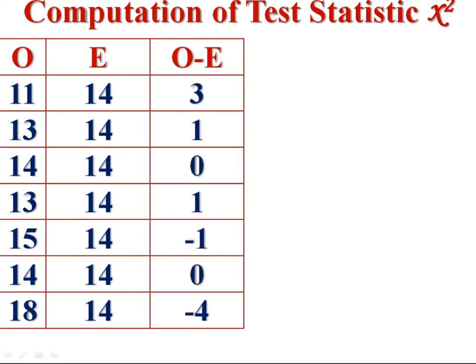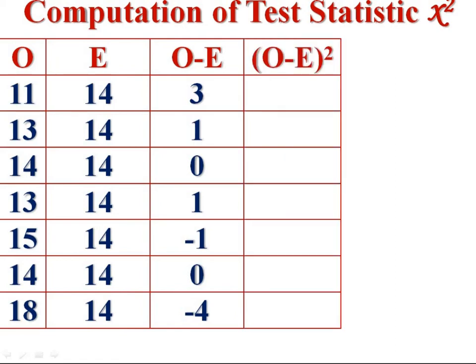Then find differences between observed and expected frequencies, O minus E, 11 minus 14 equals 3, 13 minus 14 equals 1. Then find square deviations, (O-E)². The square of differences, 3² = 9, 1² = 1 and so on.